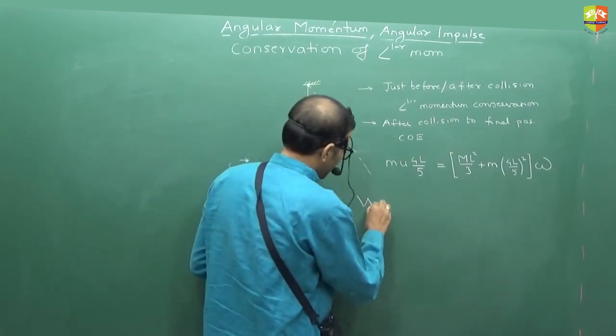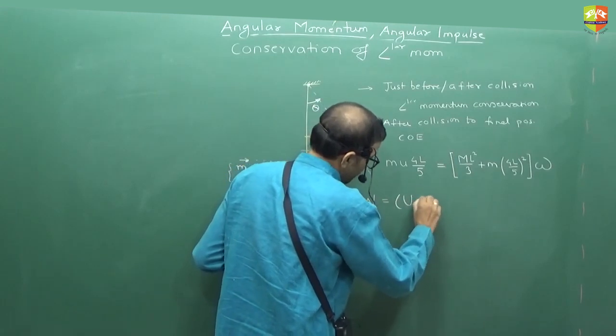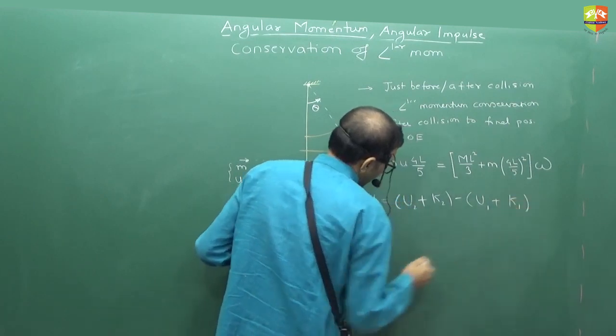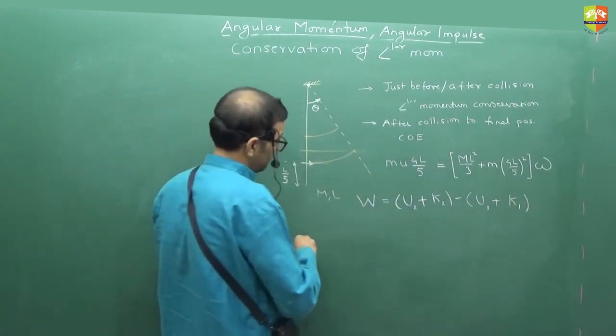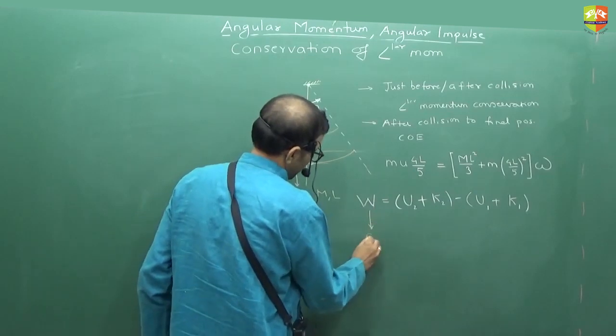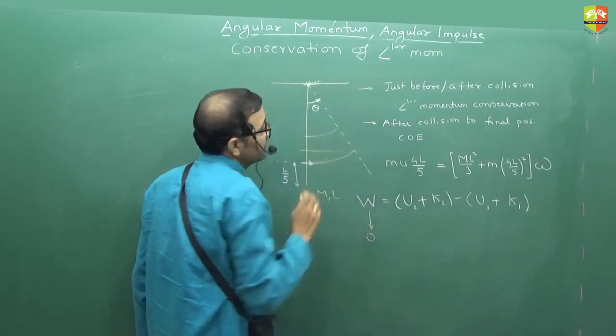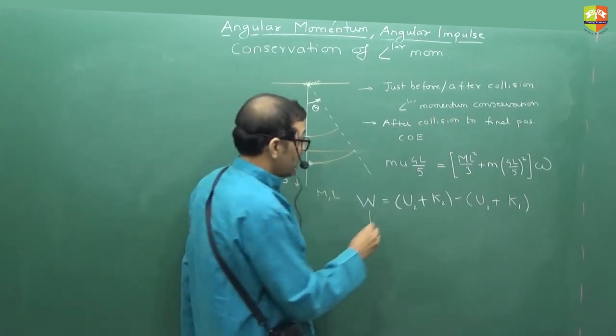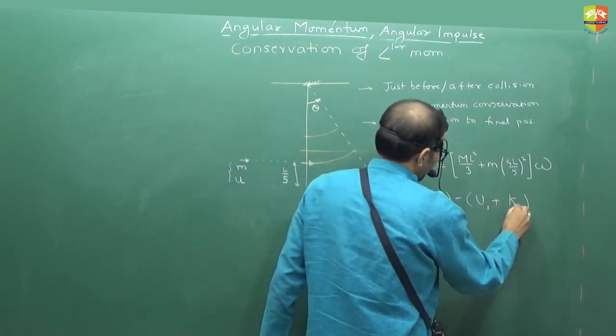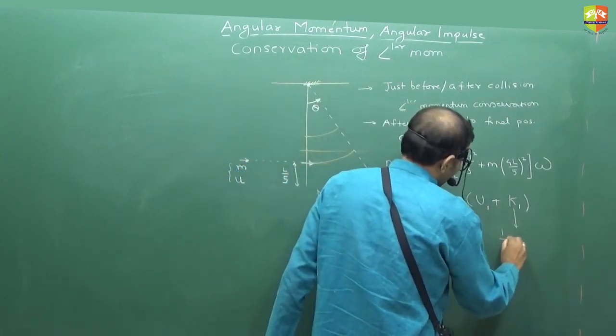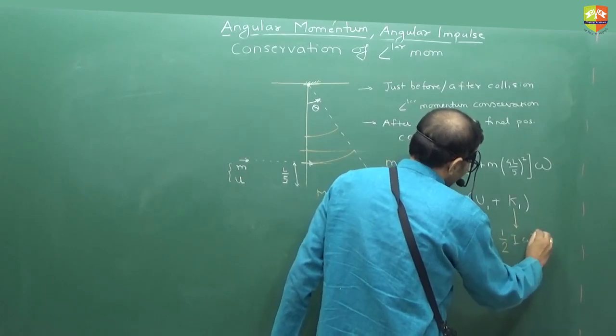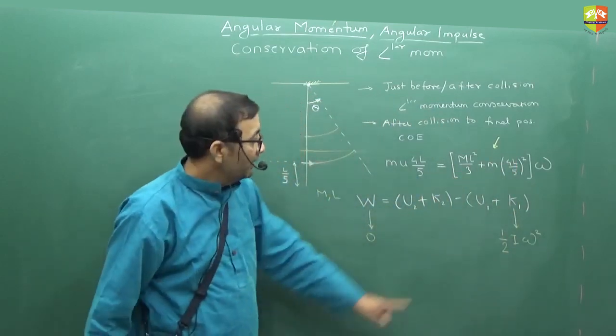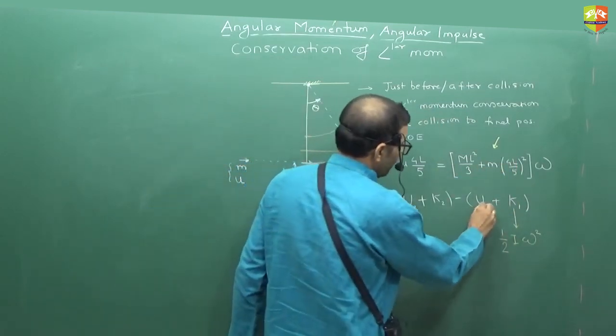Now it is conservation of mechanical energy. So which you can write like this. W is equal to U2. W is what? Zero. I can assume this to be my zero potential energy. Initial kinetic energy is what? Half I into omega square. Where I is this. And omega is that. U1 is what?